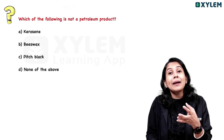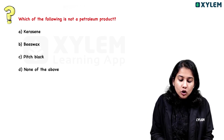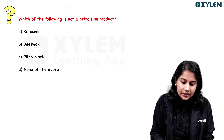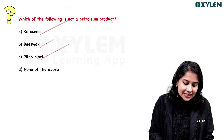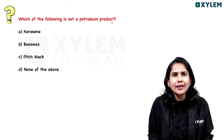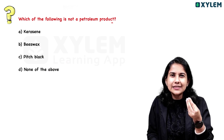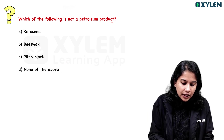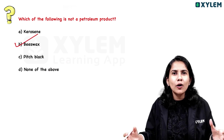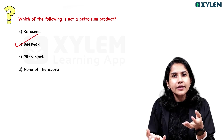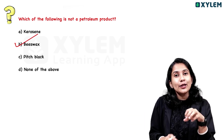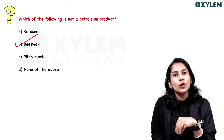Which of the following is NOT a petroleum product? The options are: Kerosene, Wax, Pitch Black, None of the above. The answer is Wax — it is not a petroleum product. It is a natural wax, not derived from petroleum.